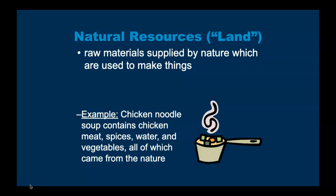Some of these examples are really good, and some aren't the best — I'll explain as we go. Some good examples to put on your sheet would be chicken, whereas meat is something different. Meat has been processed, so meat is actually an intermediate good — we'll get to that later. But chicken is definitely a natural resource. Vegetables are definitely a natural resource.